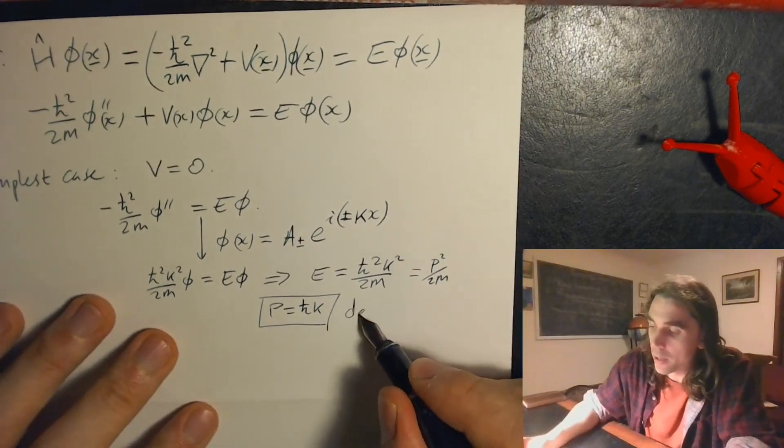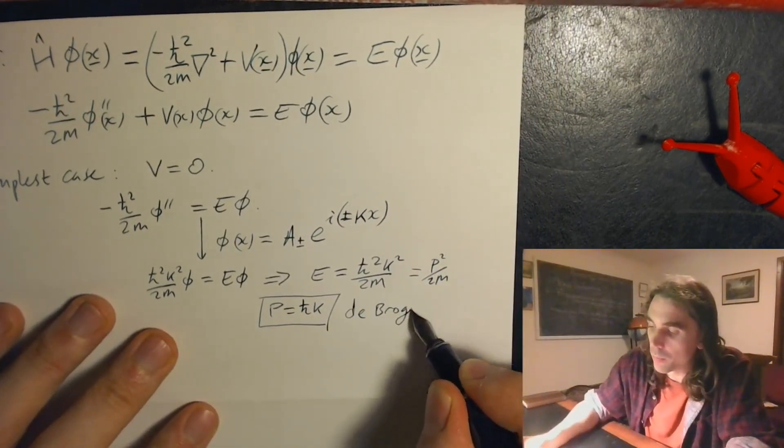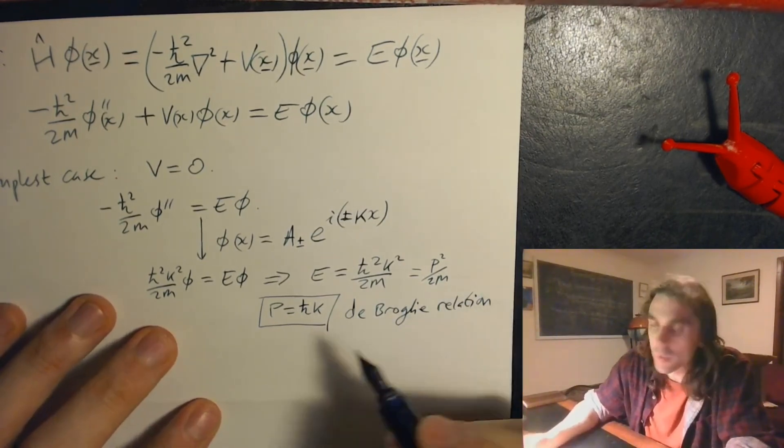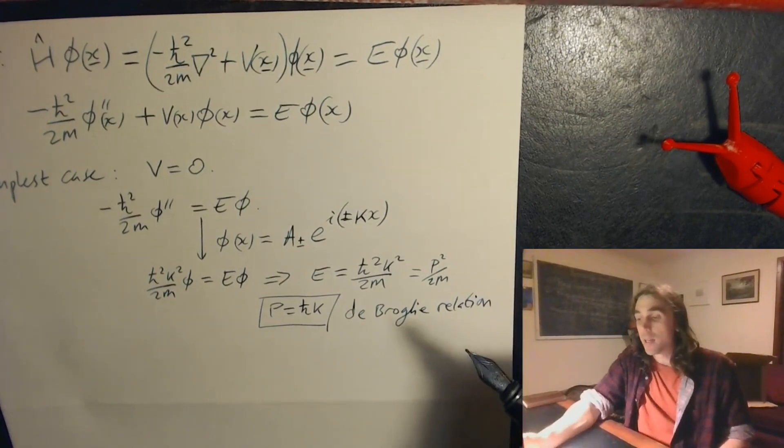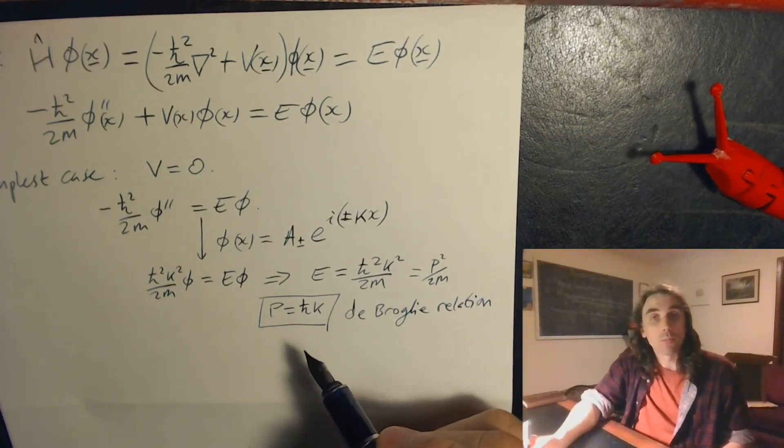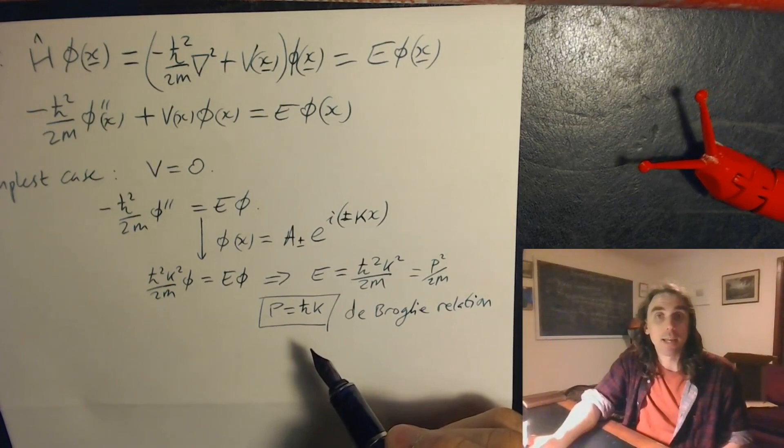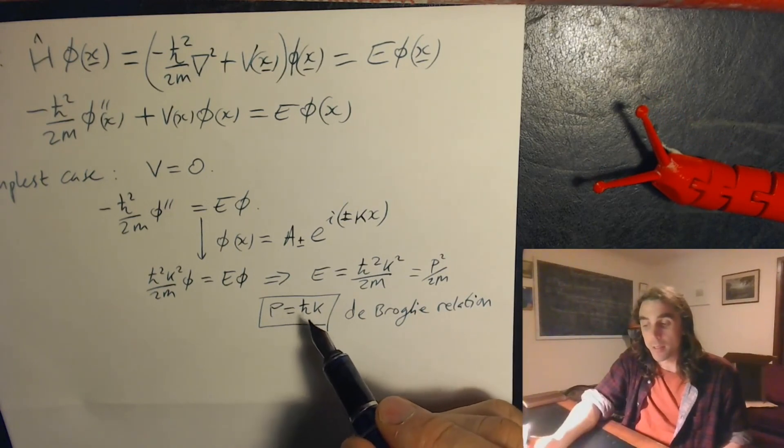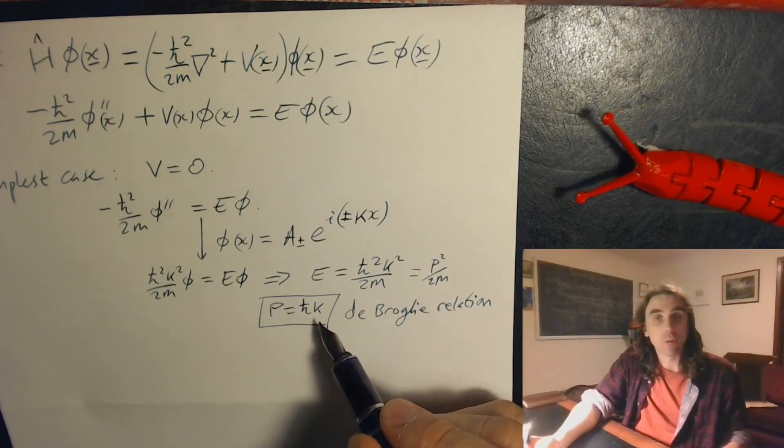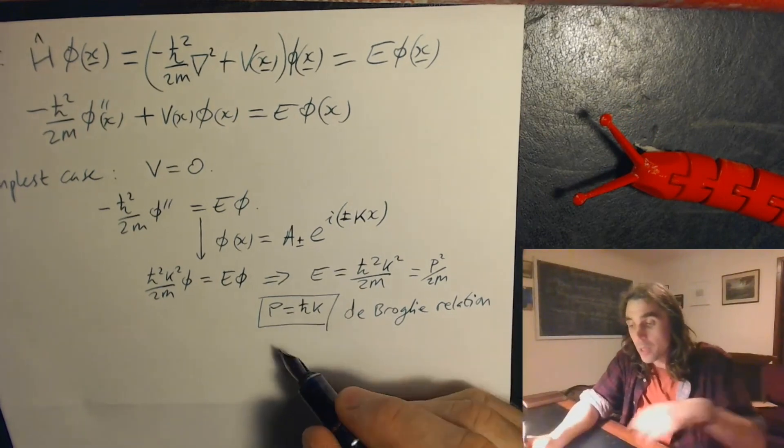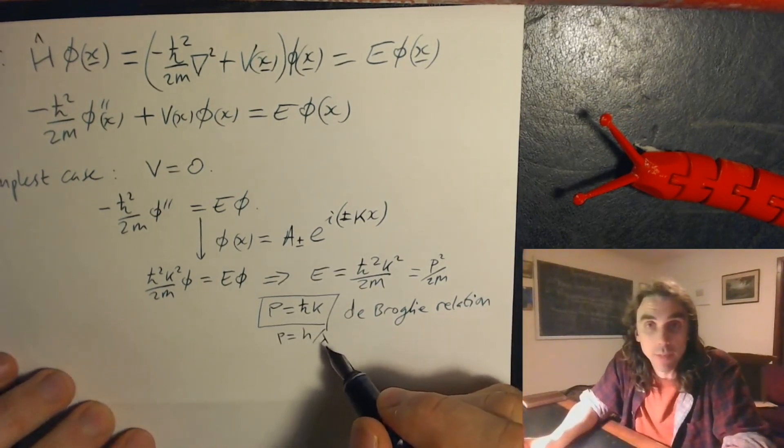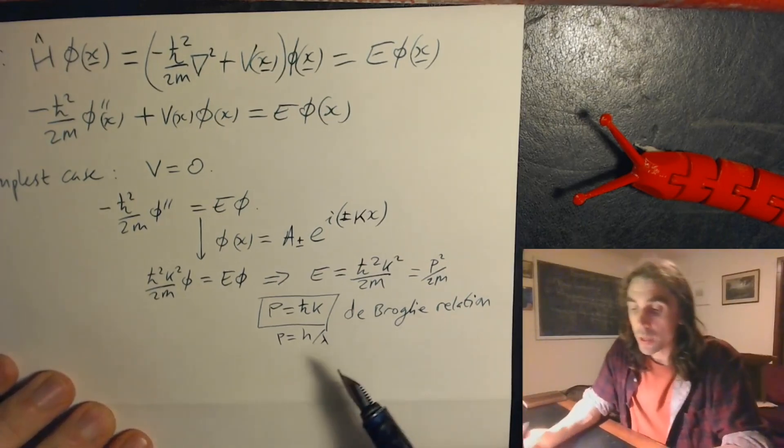But this is nothing other than our de Broglie relation. This is an energy term which tells us that all quantum particles have a wave-like description as well. The momentum p of the particle corresponds to a wave vector k for the wave. We can also write this as p equals h over lambda where lambda is the wavelength.